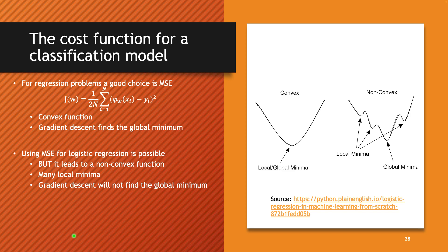In terms of the cost function, for regression problems, it's intuitive that a good choice is the so-called mean squared error. This cost function looks at the difference between the model prediction and the real labels, sums them up with a power of 2, then takes the mean by dividing by n, and also includes a division by 2. This is a popular choice because it leads to a convex function — one where there is only one global minimum point — so numerical algorithms like gradient descent can find that minimum iteratively.